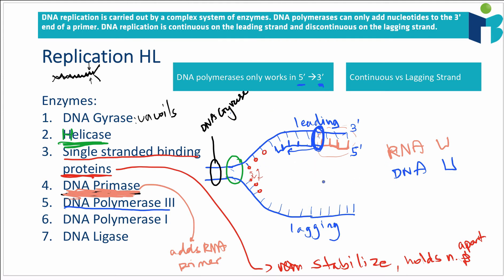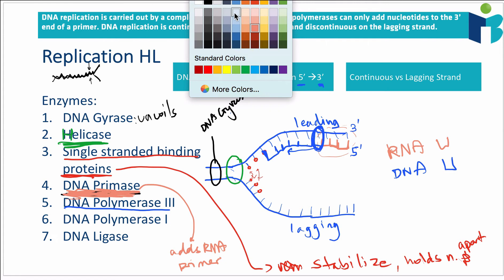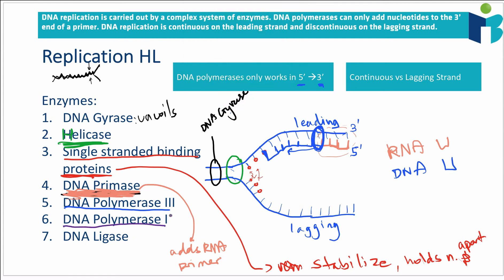DNA polymerase III takes nucleotides floating around the nucleus and adds them, working in an open direction while the single-stranded binding proteins get replaced. Once the strand is nearly complete, we have to replace the RNA primer with DNA nucleotides, because in our finished DNA strand we don't want any RNA. This is done using DNA polymerase I, which comes into the primer region and replaces the RNA nucleotides with DNA nucleotides.